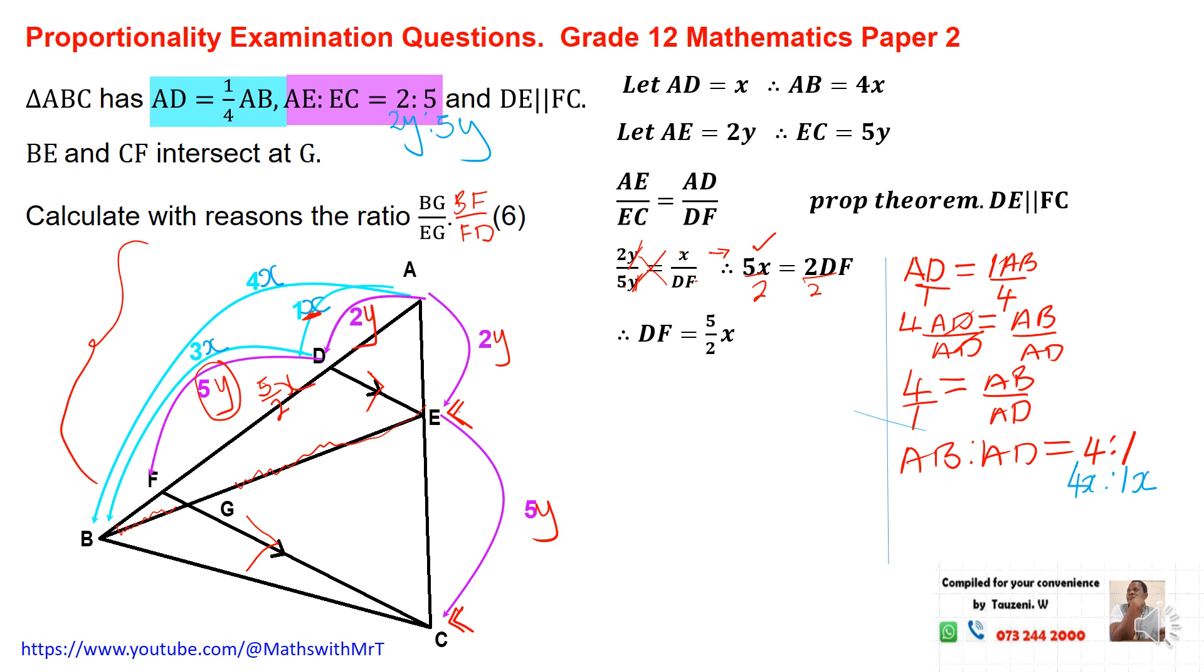Now from here, I need BF. From the diagram, BF, from B to F is equal to BD, which is this piece here. That's 3X minus FD. If you take B to D, 3X minus DF, you will get the value of BF. And we are using the measurements that are there. BD is equal to 3X and FD is what we have calculated in our previous calculation here. It's 5 over 2X. So 3X minus 5 over 2X gives us 1 over 2X. This is the length of the line from B to F.